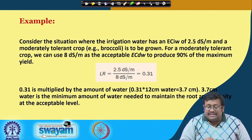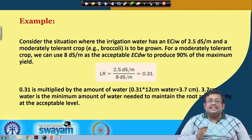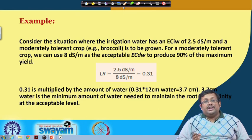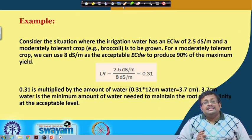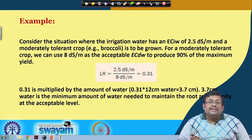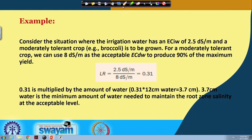Let us see a numerical example of leaching requirement. Consider the situation where the irrigation water has an EC_iw of 2.5 dS/m and a moderately tolerant crop like broccoli is to be grown. We can use 8 dS/m as the acceptable EC_dw to produce 90% of the maximum yield. The leaching requirement is EC_iw / EC_dw = 2.5 / 8 = 0.31.